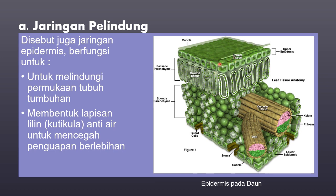Jika kamu perhatikan permukaan daun, maka kamu akan melihat bagian yang agak mengkilap. Bagian tersebut disebut dengan bagian kutikula atau lapisan lilin. Jika kamu lihat pada gambar, terlihat yang berwarna bening — inilah yang disebut dengan lapisan kutikula. Di bagian bawah kutikula inilah yang disebut dengan jaringan epidermis. Biasanya jaringan epidermis ini hanya terdiri dari satu lapis sel saja, seperti yang kamu lihat pada gambar ini — contoh jaringan pelindung atau jaringan epidermis yang terdapat pada daun tumbuhan.